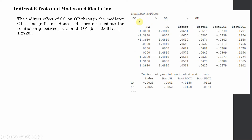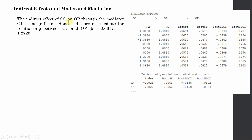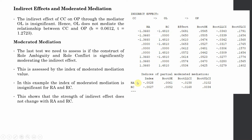We also have a second indirect effect: CC to OP through organizational learning (OL). At average levels of role ambiguity and role conflict, is this indirect effect significant? No — there is a zero in between. So OL does not mediate the relationship between CC and OP. For moderated mediation, both the index for role ambiguity and role conflict are also insignificant — neither moderates the indirect effect from CC to OP through OL.